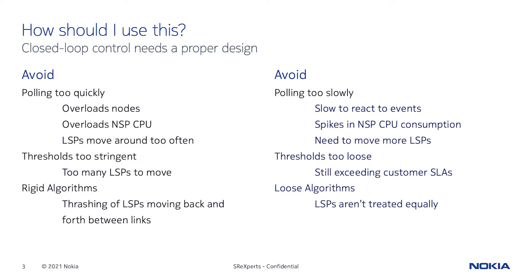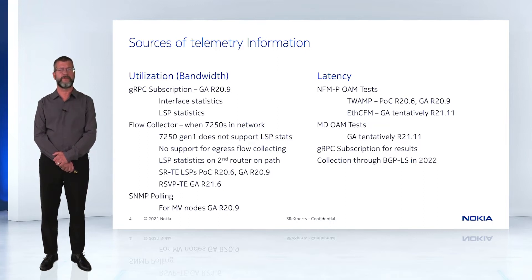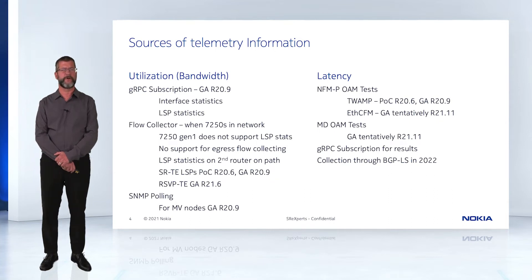NSP uses gRPC as the preferred mechanism to retrieve telemetry information. It is fast, efficient, and eliminates polling. Other mechanisms need to be used in certain cases. The NSP flow collector is used to gather LSP statistics from the 7250 Gen1 routers, as there is no native support for LSP statistics.